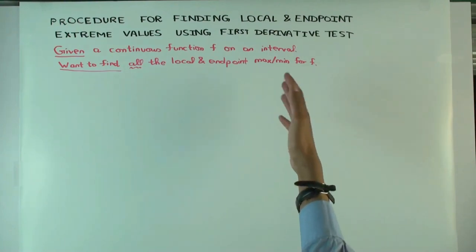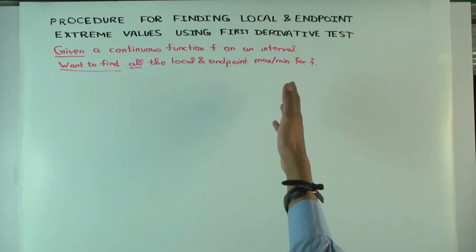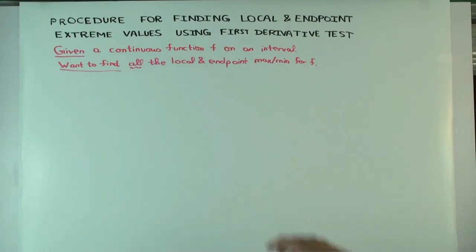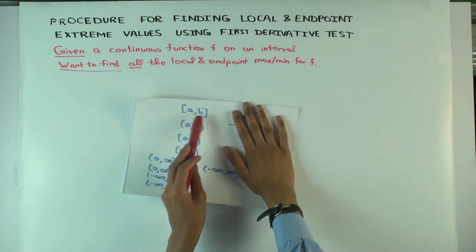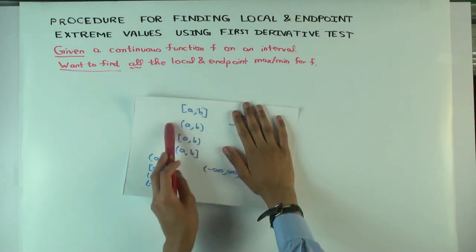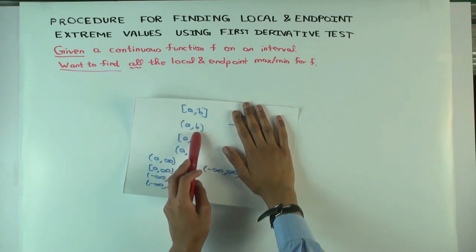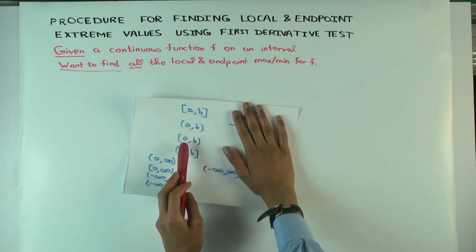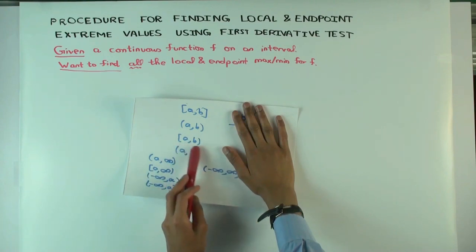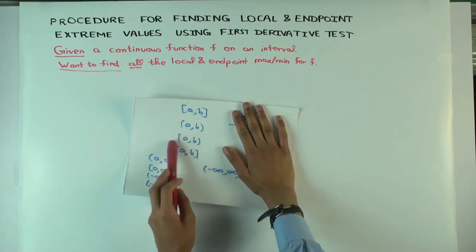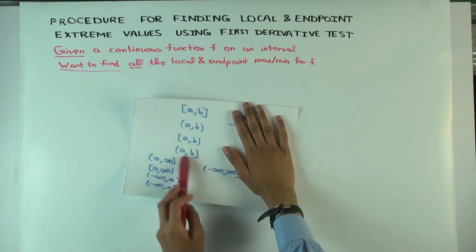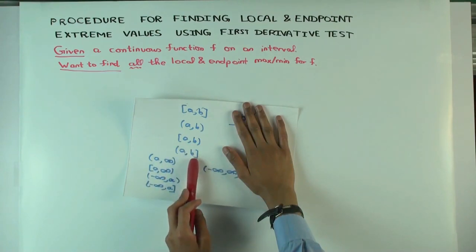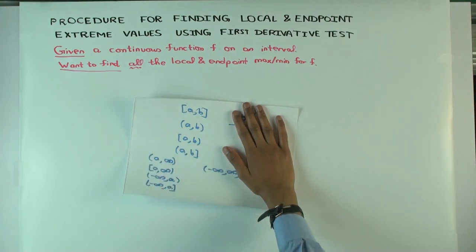Endpoint max means it's a point at the end of the domain. For an interval, that would mean it's either A or B. For an open interval, there are no endpoints in the domain. For a half-open interval like [A, B), A is an endpoint in the domain but B is not, because B is not in the domain. The other case has B as an endpoint in the domain.